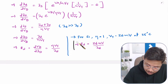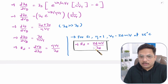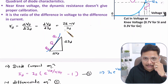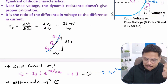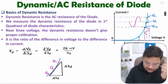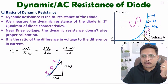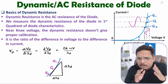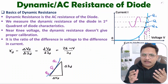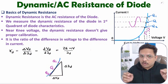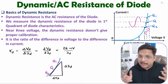So this is the equation we use for dynamic resistance: Rd = 26 millivolts divided by diode current in forward bias. As mentioned, you should not calibrate this near the cut-in voltage or knee voltage, as the calibration will not be proper there. This is all about dynamic resistance. I hope you have understood this. If you have anything to share, please note it in the comment section — I'll be happy to help. Thank you so much for watching this video.